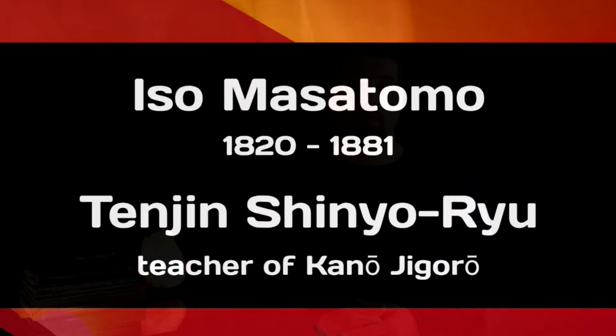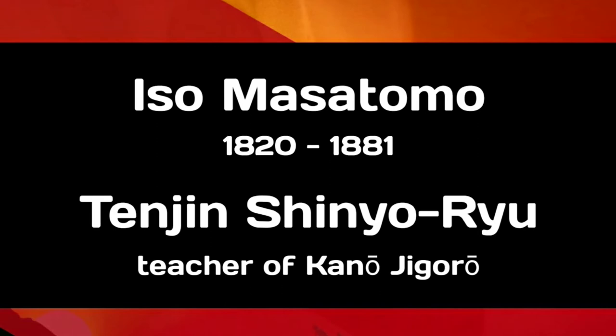Kano Jigoro then continued his studies of Jujutsu at another Tenjin Shinyo-ryu school. His new instructor was Isio Masatomo, who placed more emphasis on the study and practice of kata, and he entrusted the instructions of randori to his assistants, which was increasingly Kano Jigoro.